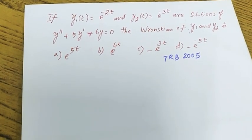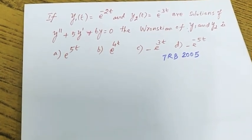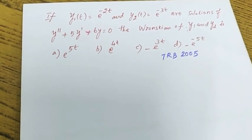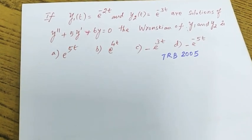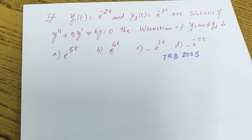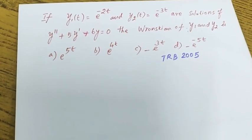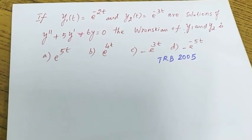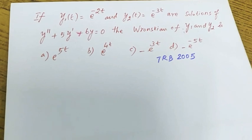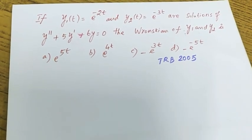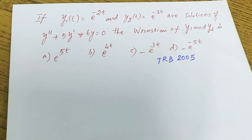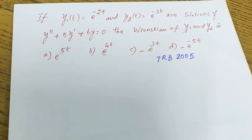If y1(t) = e^(-2t) and y2(t) = e^(-3t) are solutions of y'' + 5y' + 6y = 0, then the Wronskian of y1 and y2 — options: e^(5t), e^(4t), e^(-3t), minus e^(-5t).